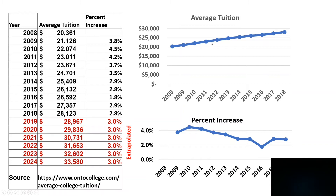Something first about college prices. I got this information from ontocollege.com — average college tuition. In 2008 it was about $20,000 a year and the data went up to 2018, which was $28,000 a year. I extrapolated from there: the percent increase is roughly 3% a year. So in 2021 a four-year college is about $31,000, and by 2024 it'll be $34,000. At a 3% per year increase, using the rule of 69 — 69 divided by 3 is 23 — so every 23 years college prices double. It's a moving target.